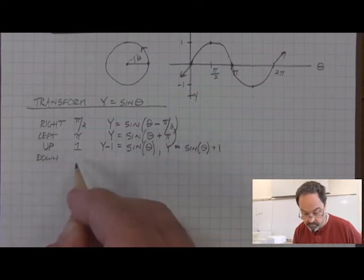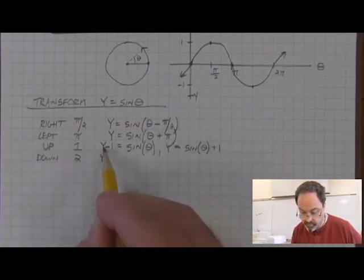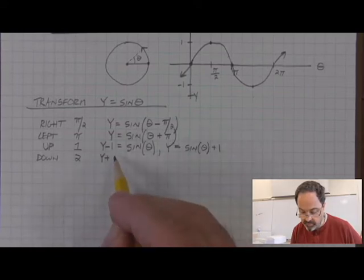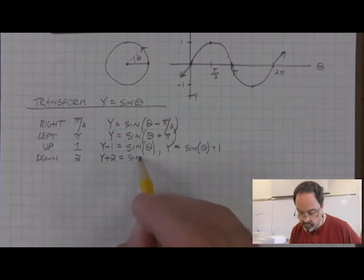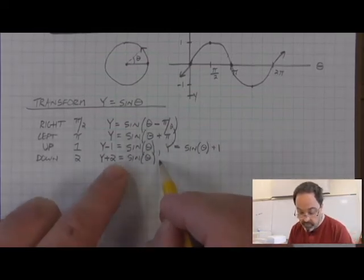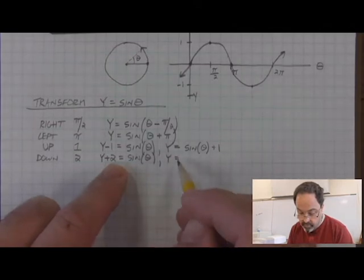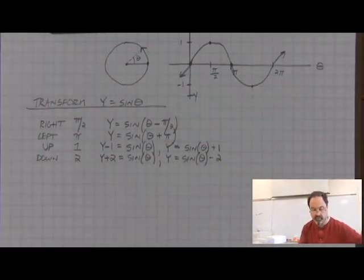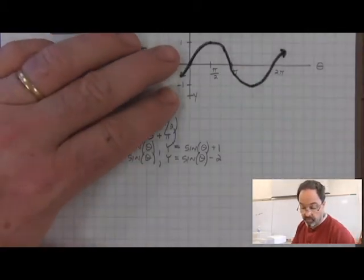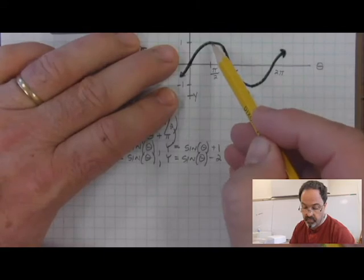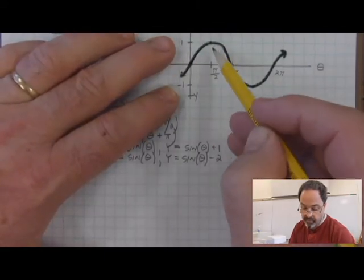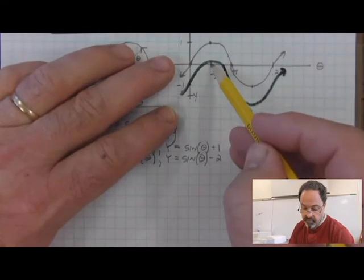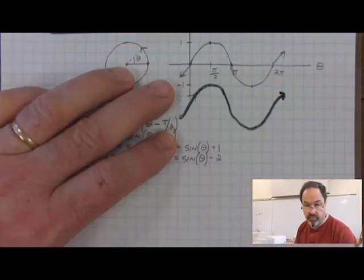Down by a certain amount means modifying the vertical variable — to go down, we add to y. To go down by 2, we add 2 to y. Solving for y gives y equals sine of theta minus 2. A downward motion by 2 means taking every single point — for example the maximum is at 1, so going down by 2 it goes down to 0 and then negative 1. Every other point shifts the same way.